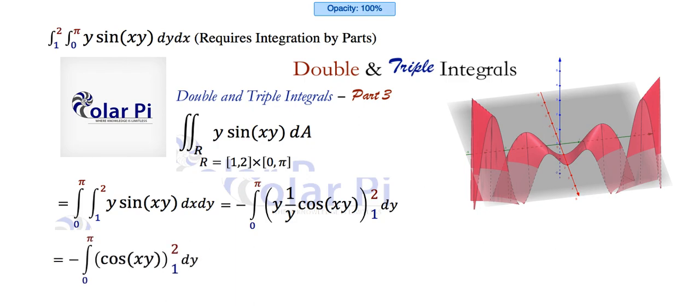Moving forward, then, we write this because why would we write y times 1 over y? We should cancel that. And so, we do that. And, otherwise, now we need to evaluate from 1 to 2 on what remains, which is cosine of xy, with the negative in front of the integral. And so, we evaluate. And, there we are.